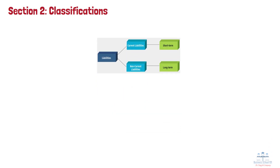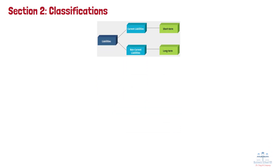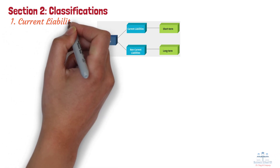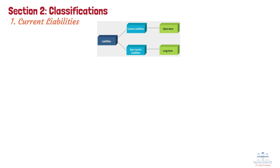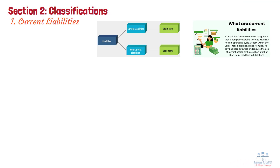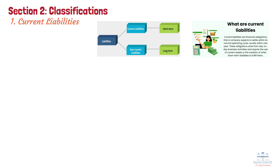Section 2: Classifications. Liabilities can be classified based on their due date and nature. The most common classification is based on short-term versus long-term obligations. Type 1: Current Liabilities. Current liabilities are financial obligations that must be settled within one year. These liabilities impact a company's short-term financial health and liquidity.